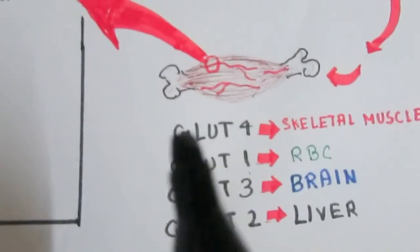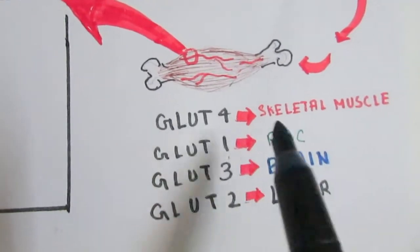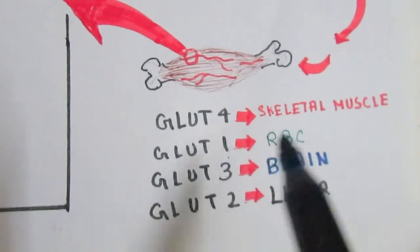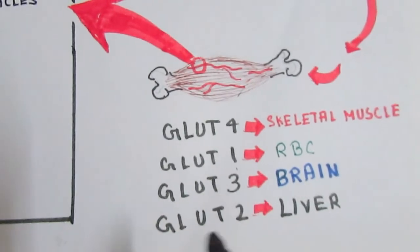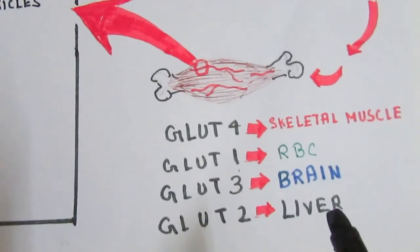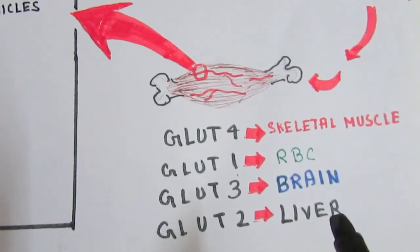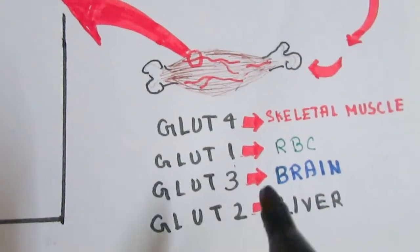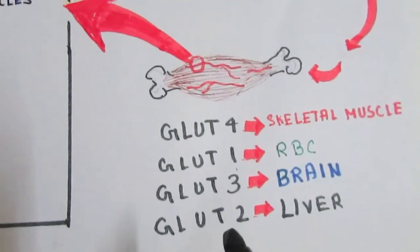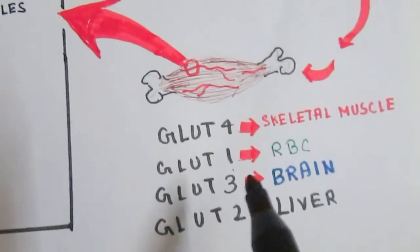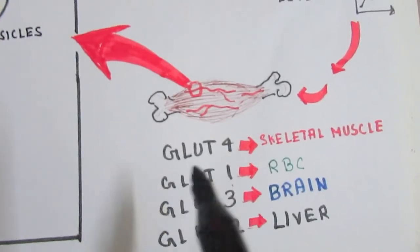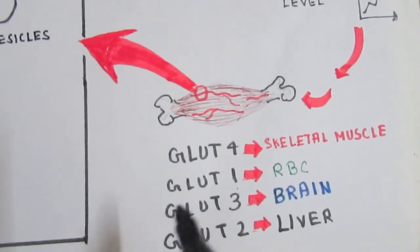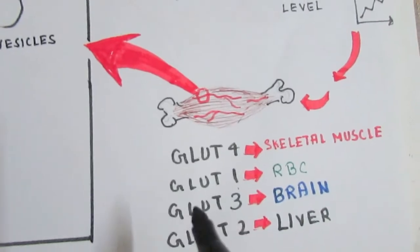Another interesting aspect: GLUT4 transporters are exclusively found in skeletal muscle, whereas GLUT1 is found in RBCs, GLUT3 in brain, and GLUT2 in liver. For instance, in liver, when glucose needs to be converted into glycogen, liver will uptake glucose with GLUT2 transporter, not GLUT4. Brain exclusively utilizes glucose for energy, so brain needs to take up glucose by GLUT3.